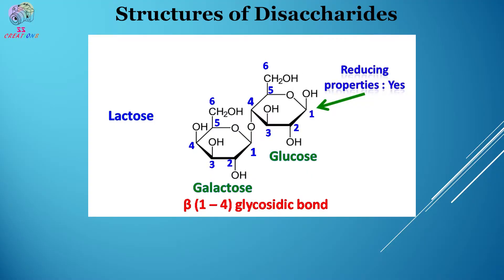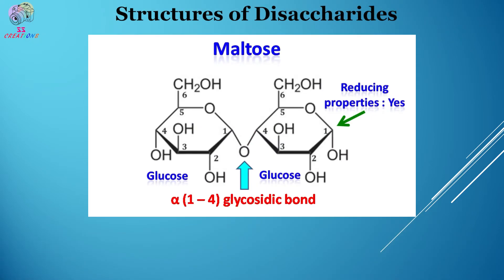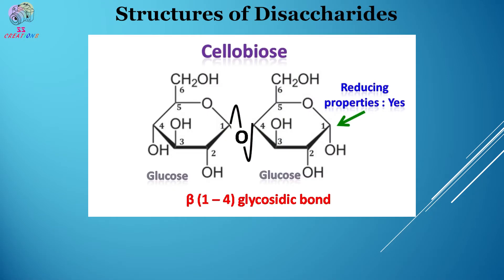Now let's talk about different disaccharides. The first is lactose, commonly known as milk sugar. It is formed by galactose and glucose linked together by a β-1,4 glycosidic bond. In lactose, the glucose has a free aldehyde group, hence lactose is a reducing sugar. The second is maltose, formed by two molecules of glucose linked together by an α-1,4 glycosidic bond. The second molecule of glucose still has a free aldehyde group, which gives maltose its reducing properties. The third is cellobiose, which is similar to maltose but has a β-1,4 glycosidic bond instead of α-1,4.